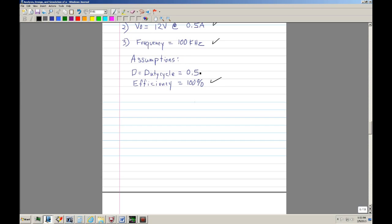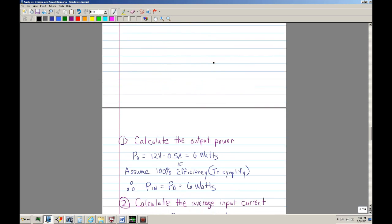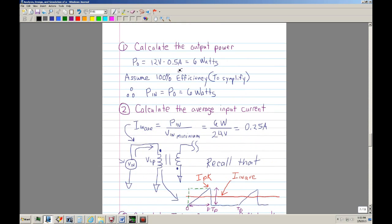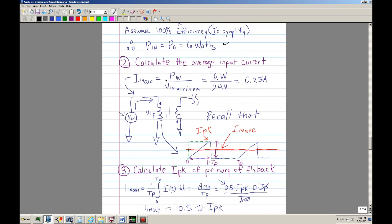These are the assumptions to make the math easier or just to simplify. We're going to assume 100% efficiency and a duty cycle of 50%. So the first thing we did is we calculated the output power. Since power is 12 volts and we wanted a current of half an amp, that comes out to 6 watts.